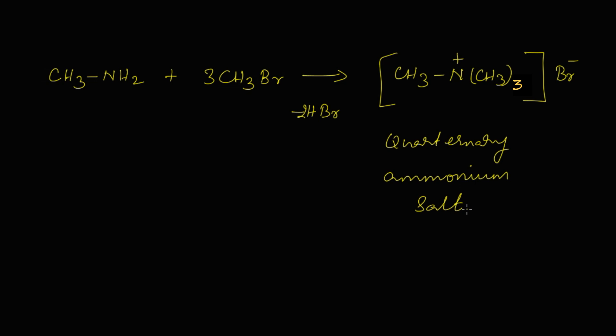Let's recall the reactions: when methylamine reacts with one molecule of methyl bromide we get a secondary amine; with two molecules of methyl bromide we get a tertiary amine; with three molecules of methyl bromide we get a quaternary ammonium salt. Thank you.